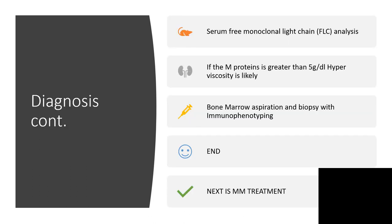Still on diagnosis, we will have serum free monoclonal light chain analysis. If the multiple myeloma protein is greater than 5g per dL, hyperviscosity is very likely. Bone marrow aspiration and biopsy with immunophenotyping will be necessary. You will assay for immunoglobulin A, immunoglobulin G, immunoglobulin D, and immunoglobulin M, because B-lymphocytes are mostly affected here and we need to assess the levels of those immunoglobulins.